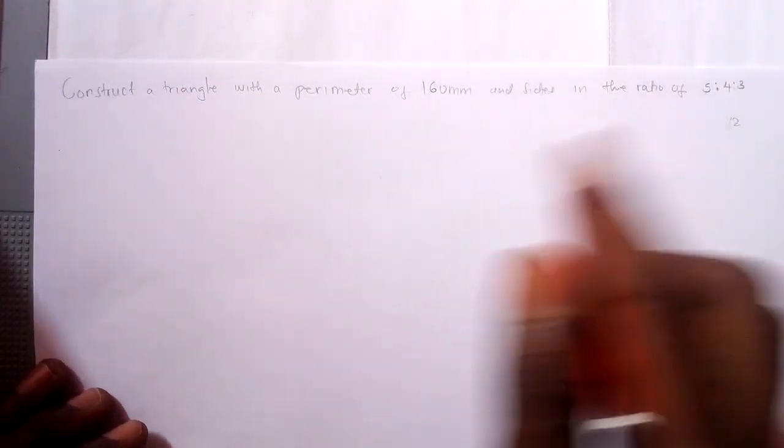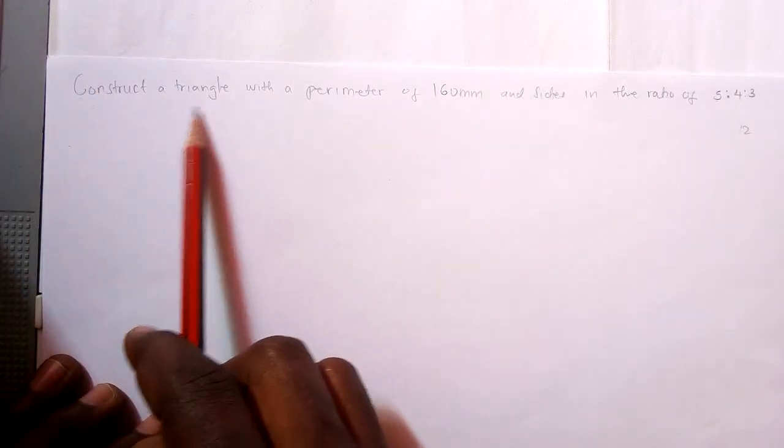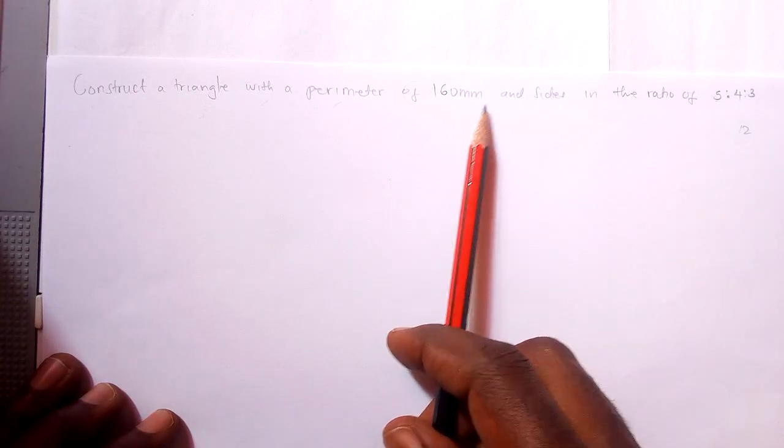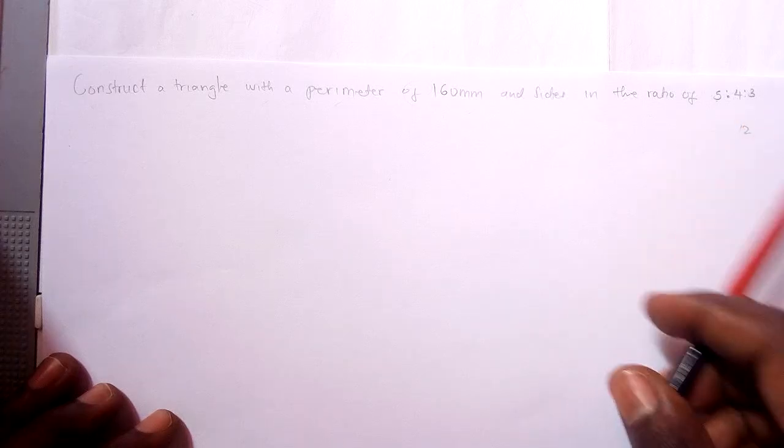Hello, I hope you are fine. We are here for construction of a triangle if we are given the perimeter and the ratio of the sides. As you see the example here, we are going to construct a triangle with a perimeter of 160 millimeters and the sides in the ratio of 5:4:3.